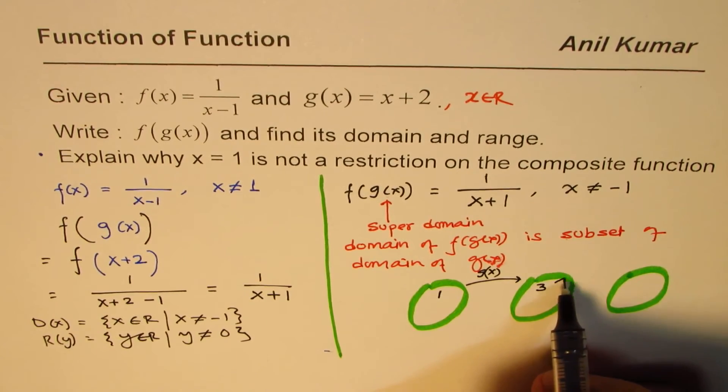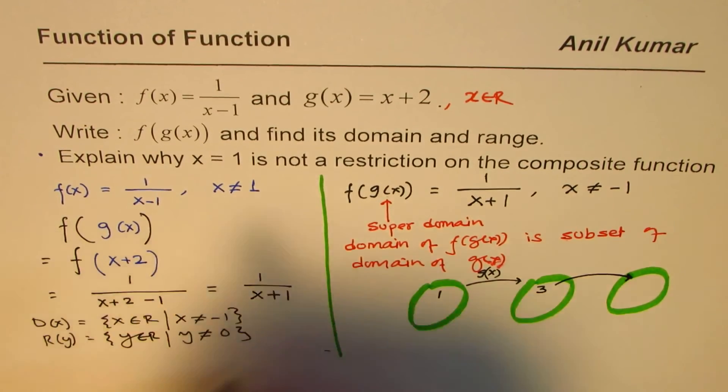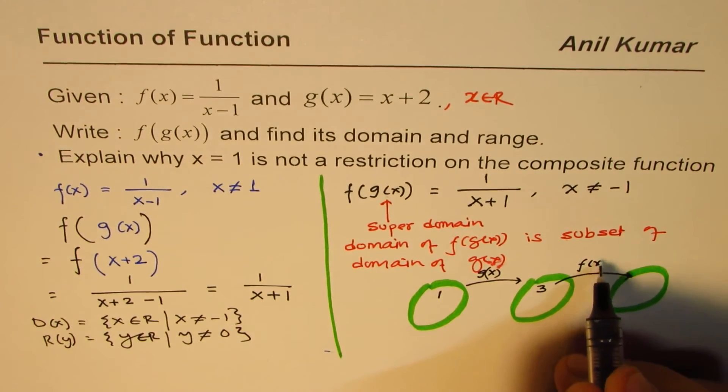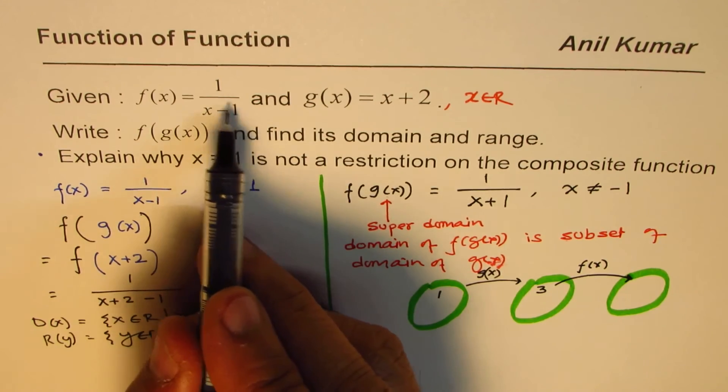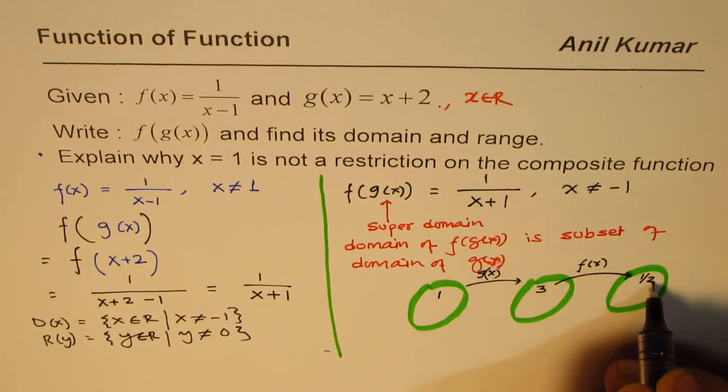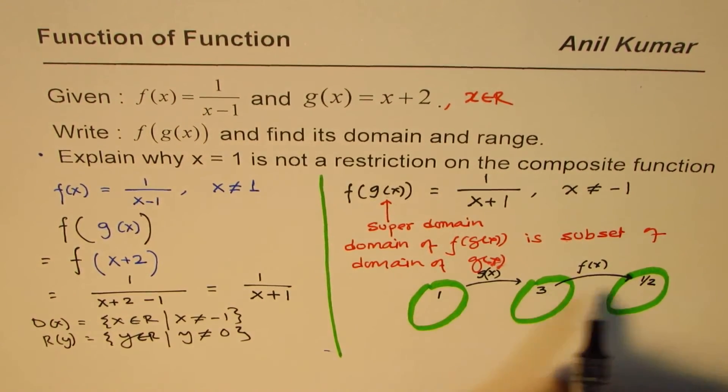Now with 3, I am going to perform the outside function which is f(x). If I substitute 3 here, I get 1/(3-2) which is 1/1, which is half. Wait - 3-1 is 2, so I get 1/2. So for 1 I am getting a value.